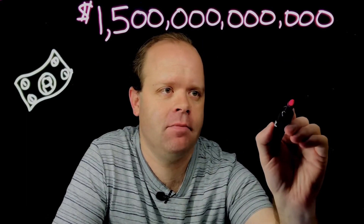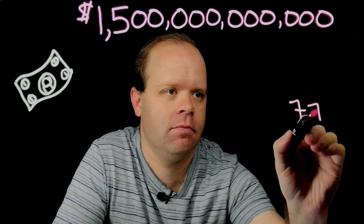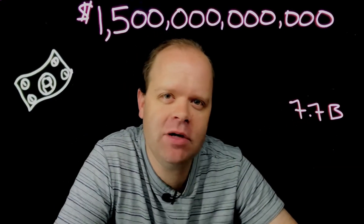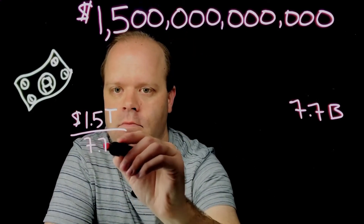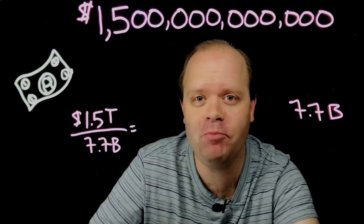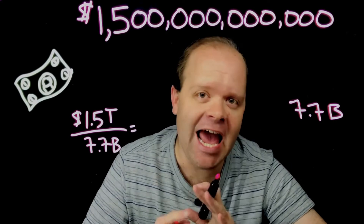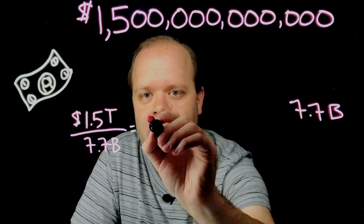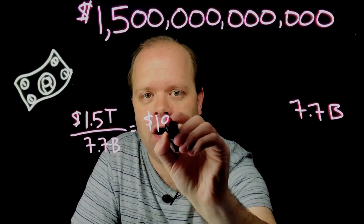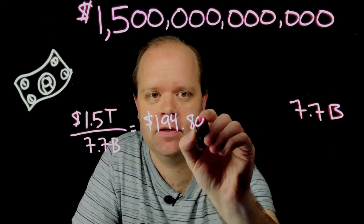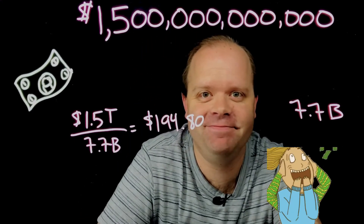There are currently about 7.7 billion people living on this planet. If you took that $1.5 trillion and equally divided it among everyone alive, everybody would receive a check for $194.80. So given all that, what are some ways to avoid contributing to that $1.5 trillion debt tower and actually be able to go to college and afford it?